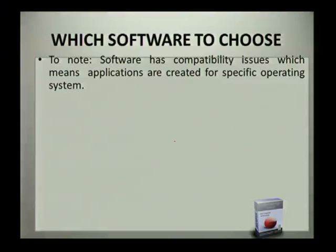Lastly, why do we need to choose specific software? Software has compatibility issues, which means applications are created for specific operating systems. When Windows XP was made, there were specific application software programs meant for it. Nowadays, if you're using Windows 7 or 8 and you still want to use application software from Windows XP, it can be a problem because of software compatibility.